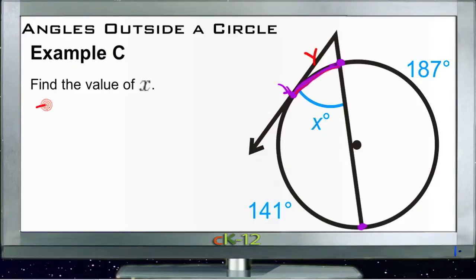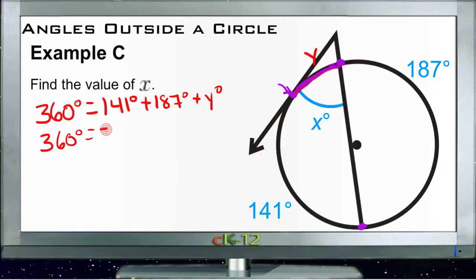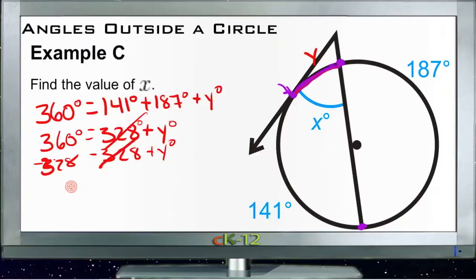So we have 360 degrees is the same thing as 141 degrees plus 187 degrees plus y degrees. So that gives us 328 degrees. We have 360 equals 328 plus y. So we just subtract 328 from both sides and we get 32 degrees equals y.